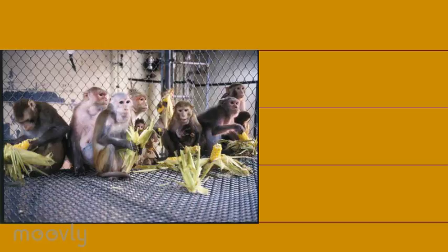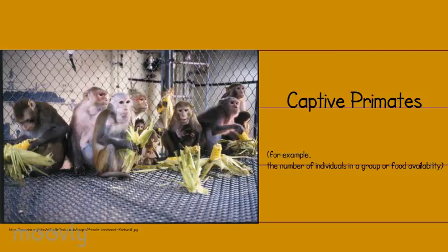A primate's behavior can be linked to their environment. When a primate is captive, it's usually easier to control variables — for example, the number of individuals in a group, how much food is available — and they are easier to observe at close range. However, it's artificial, so the primates may not exhibit their usual behaviors.